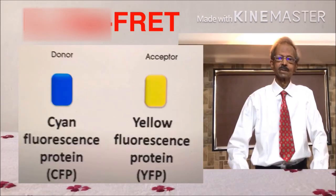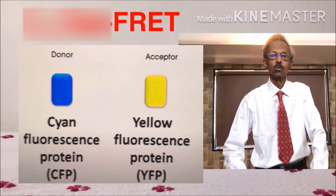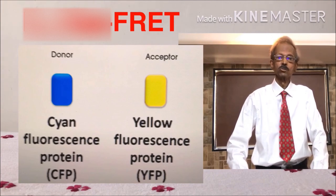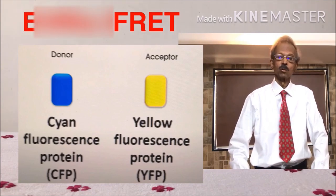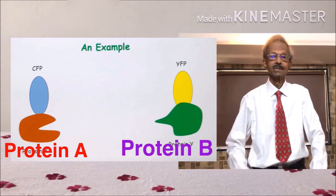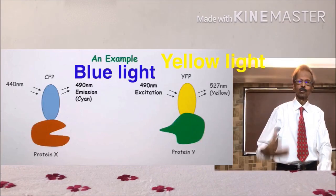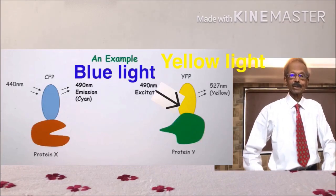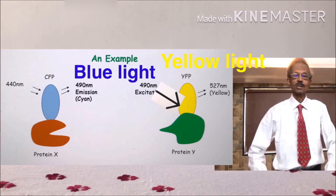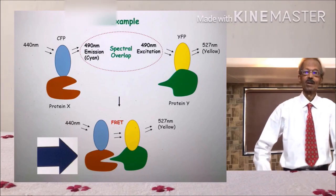According to this principle, two protein molecules are used which are tied with two different chromophores. See the figure on the left hand side. Chromophore A is tied with protein on the extreme left and emits blue light when it is exposed to violet light. And when this blue light falls on another chromophore which is close by, it emits yellow colored fluorescence. That means these two proteins must combine with each other.